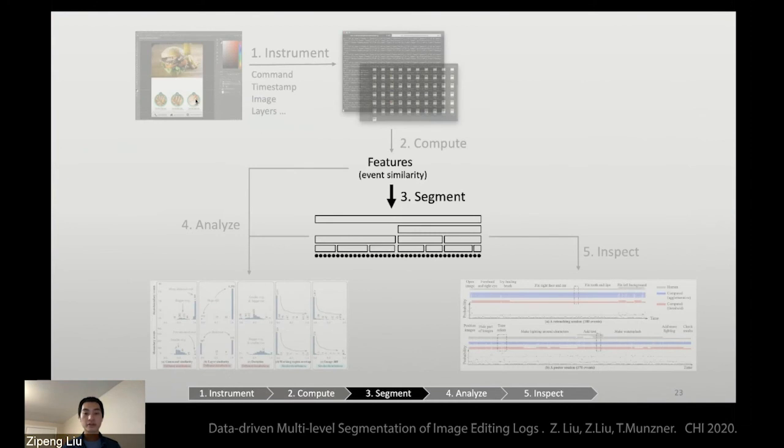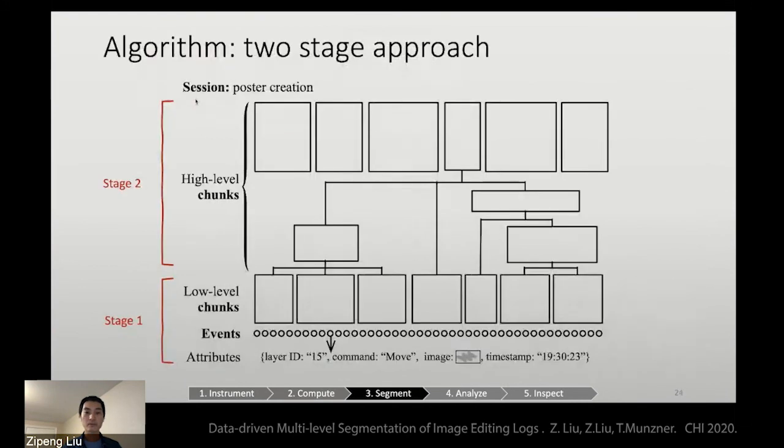After computing these features, we're going to segment a sequence into chunks. We are using a two-stage approach, where stage 1 is to construct low-level chunks from the events, and stage 2 is to group these low-level chunks into high-level chunks.